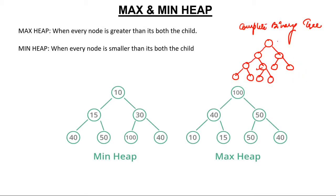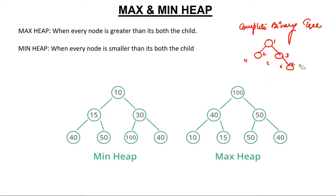The numbering starts from 1, going left to right: 1, 2, 3, 4, 5, 6, 7, 8, 9, 10, 11. Numbers start from 1 from left to right — we have to keep this in mind. So if this is a heap, it has to follow the complete binary tree property.